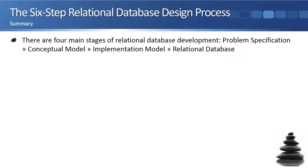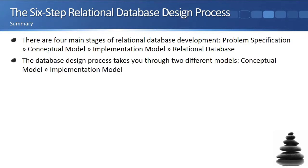There are four main stages of database development: the problem specification, the conceptual model, the implementation model, and the relational database. The database design process takes you through two different models — the conceptual model and the implementation model.